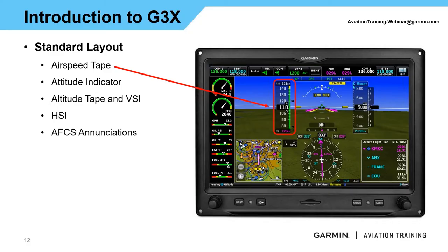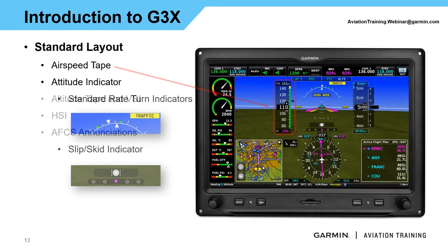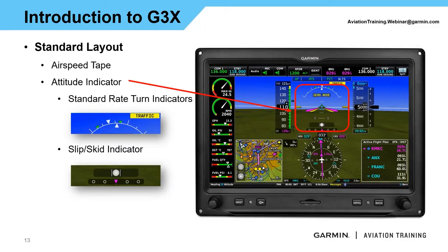Starting with our tapes — standard glass panel for us, we run airspeed and altitude tapes. Airspeed's on the left, following your traditional six-pack. In the very center you'll have your attitude indicator. With synthetic vision running, the entire display becomes an attitude indicator, with the attitude indicator bars and pitch scale. At the top are our standard rate turn indicators — very useful. For those flying G5s or TXI, you'll see very similar indicators — those green icons on either side of the roll tape.